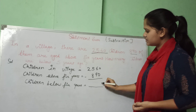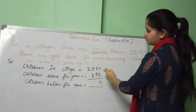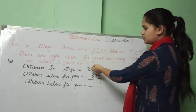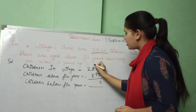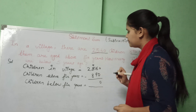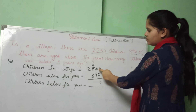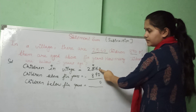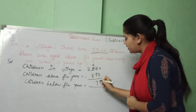Starting the subtraction: 0 minus 0. Next, we can't subtract 9 from 6, so we take a borrow from 5. The 5 becomes 4 and 6 becomes 16. When we subtract 9 from 16, 7 is left.